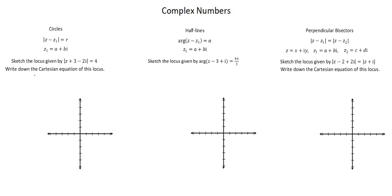I'll begin by rewriting the equation to clearly identify z1. The modulus of z minus, brackets, minus 3 plus 2i, close brackets, modulus sign equals 4.